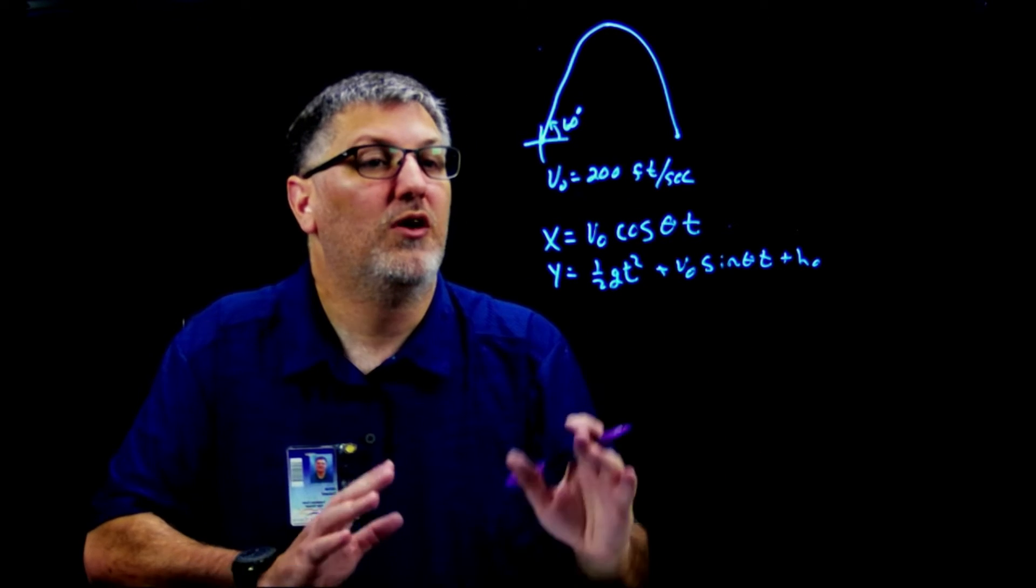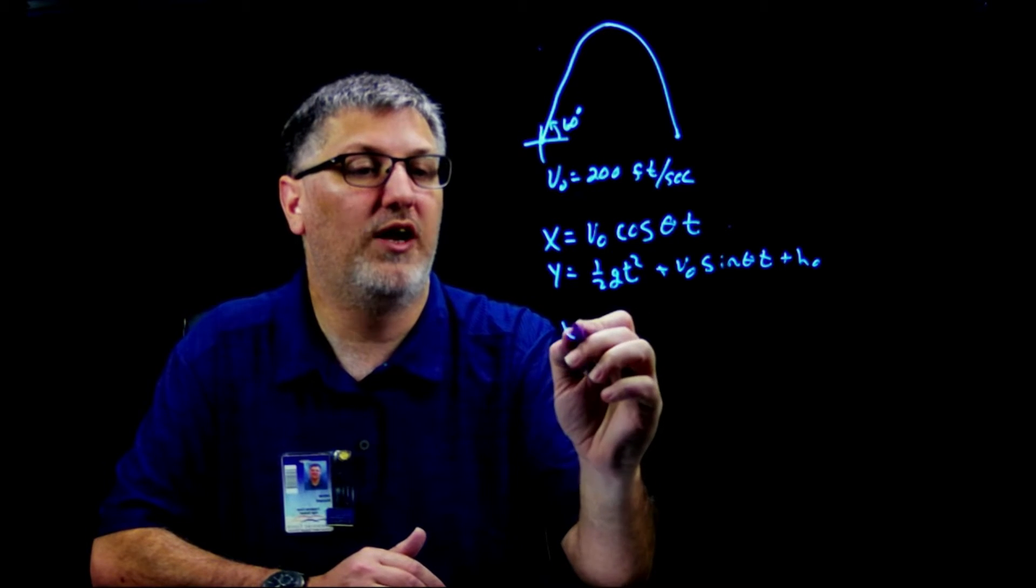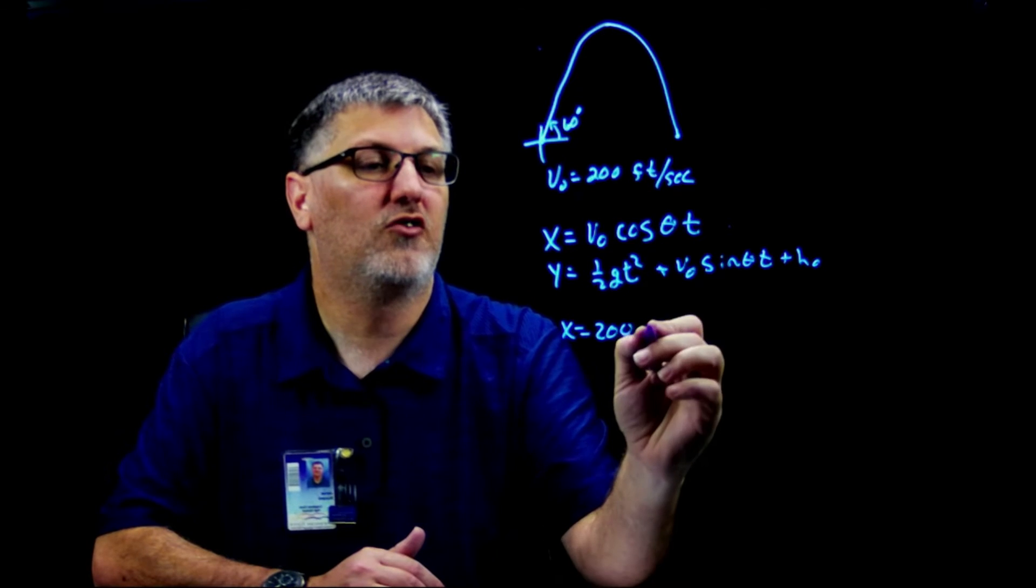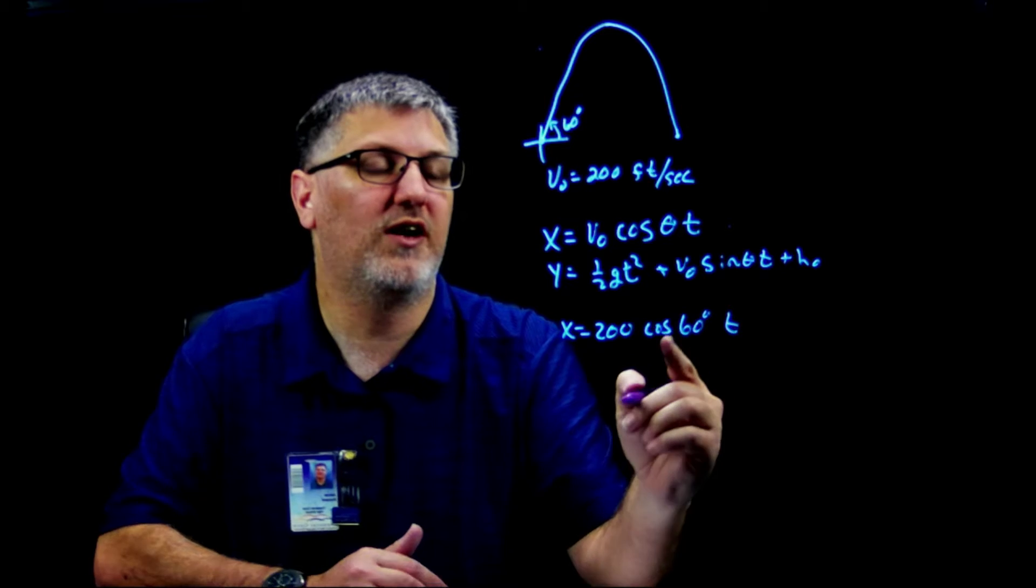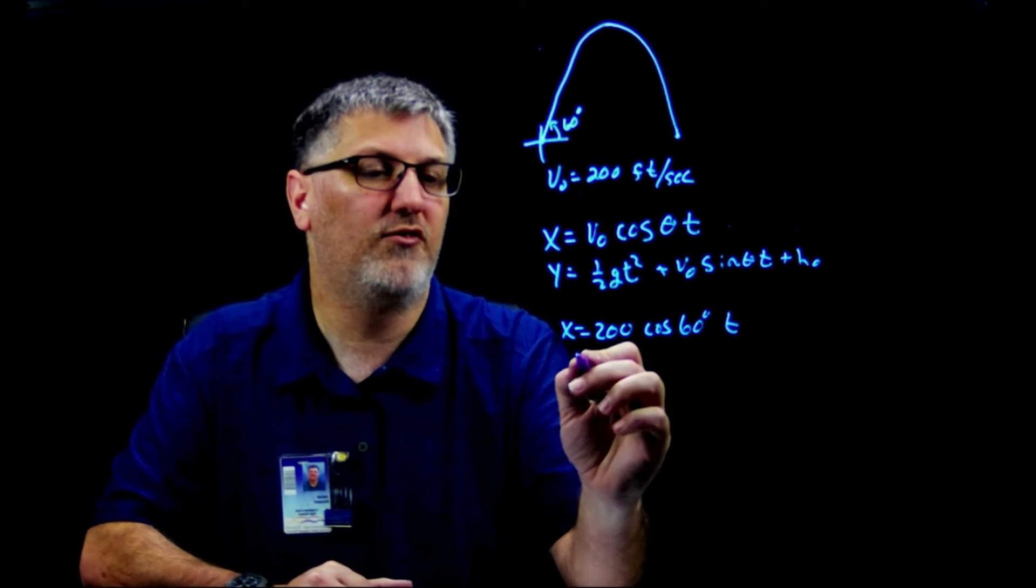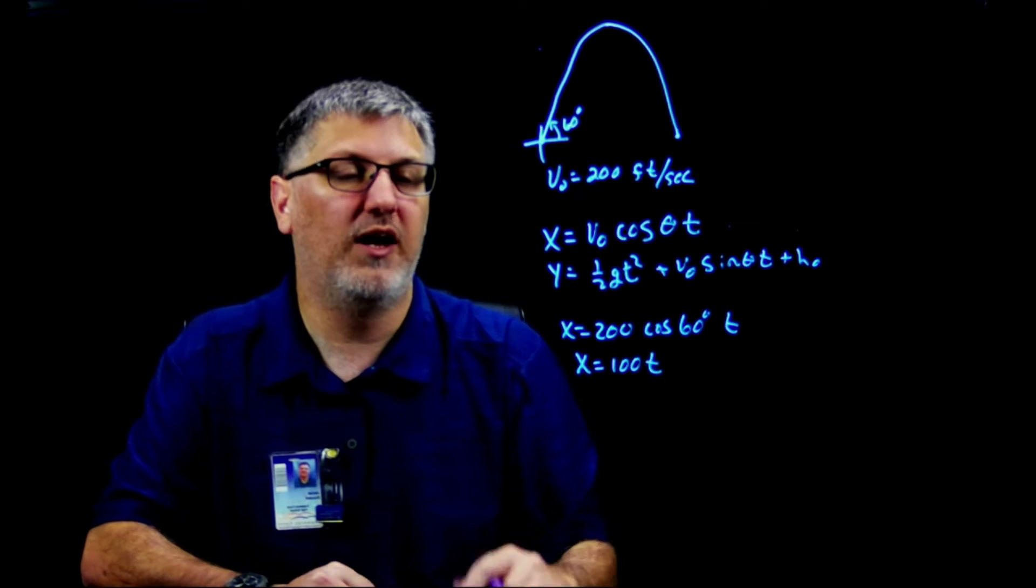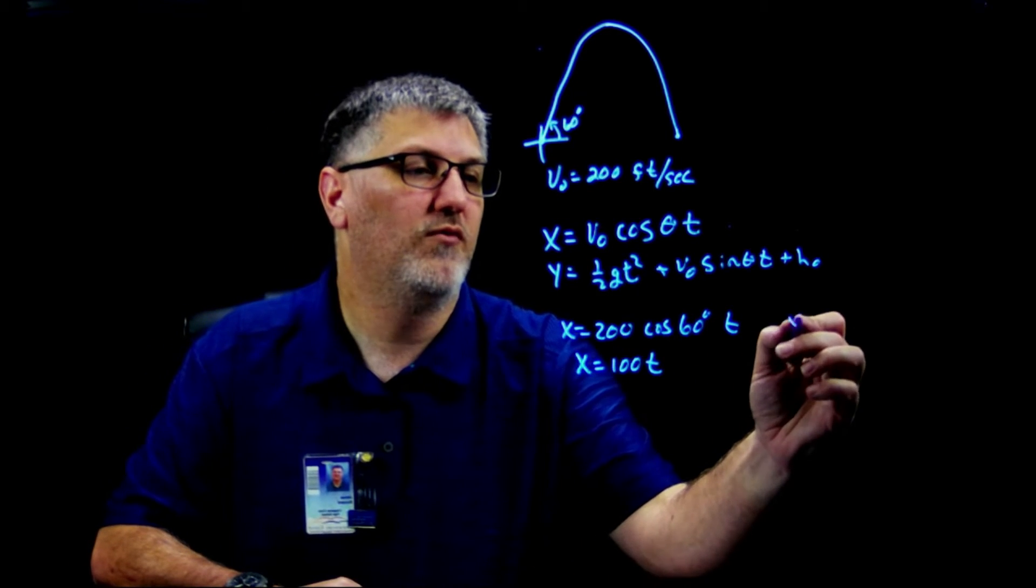To set up the kinematic equation is pretty straightforward. I'm simply going to say x = 200 cos(60°) t. Well, cosine of 60 degrees is one half, so my x is going to be 100t. There's my x equation, easy peasy.